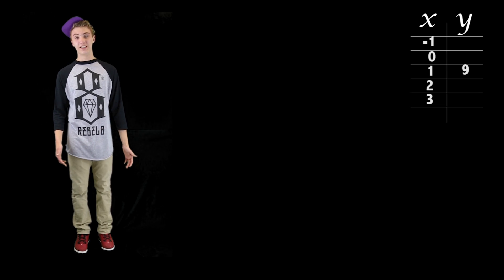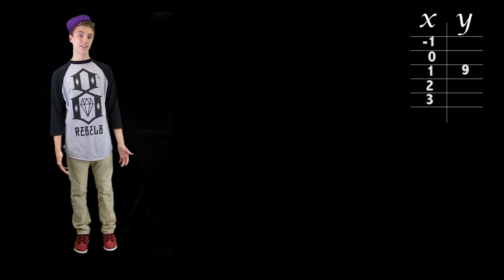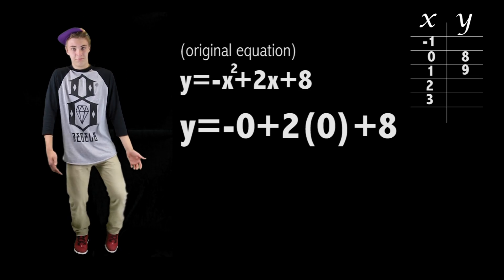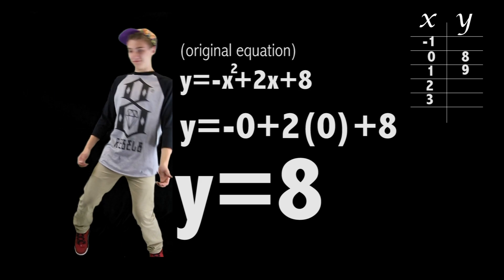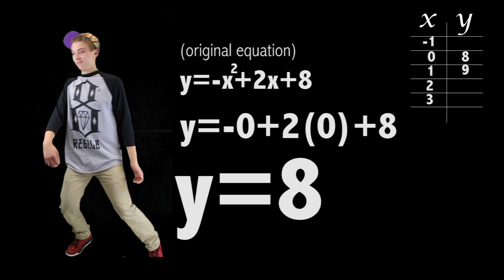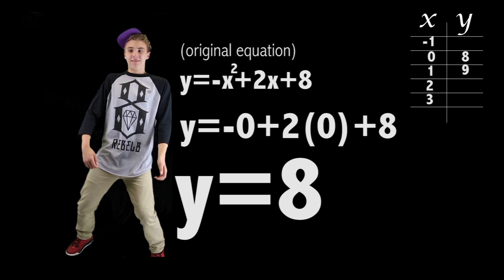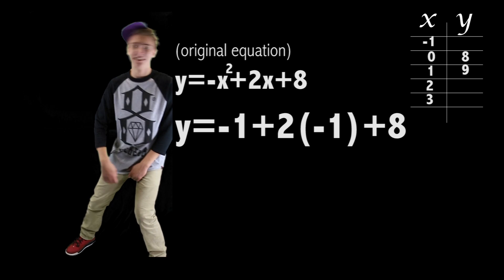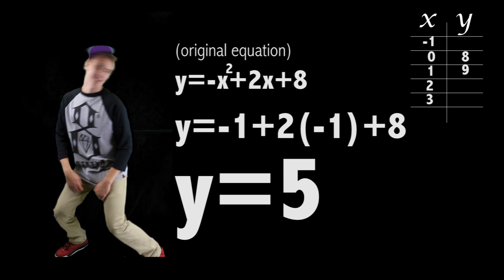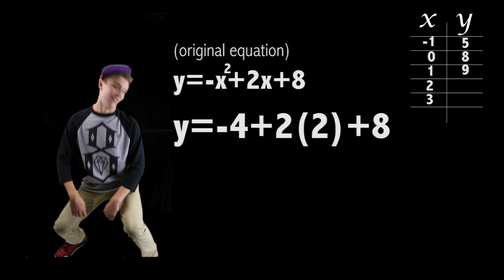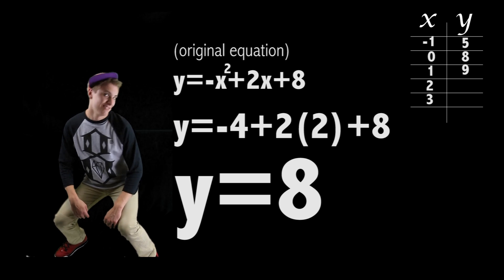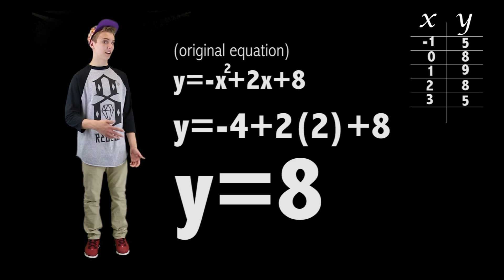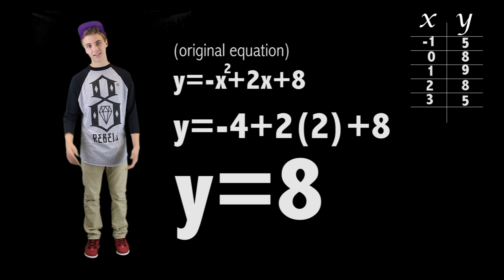Then we need to take the same equation and substitute the other x values into it. Now we just need to mirror the points on the other side.